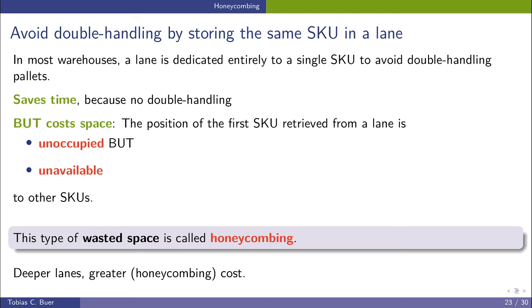The position of the first SKU retrieved from a lane is unoccupied but unavailable to other SKUs. So when we pick a pallet of Pepsi from a Pepsi lane, then we can only store Pepsi in this lane. But we are not allowed to store Mountain Dew in this lane, because this would lead again to a mixing.